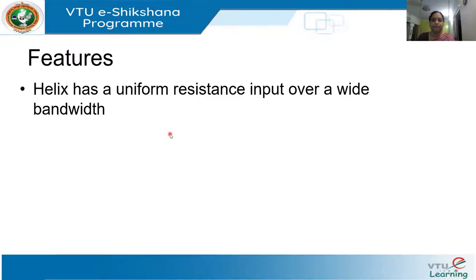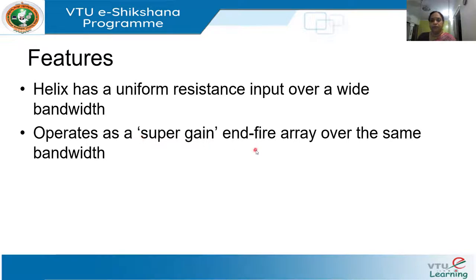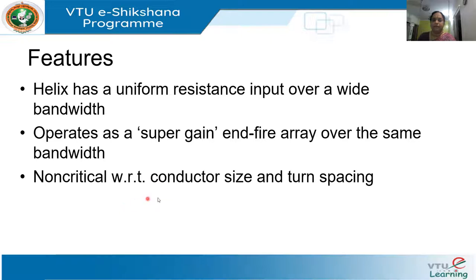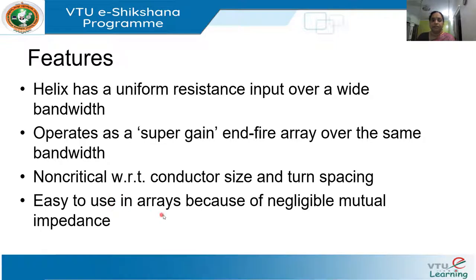What are the basic features? It has a uniform resistive input over a wide bandwidth, and even if you operate it as an N-fire array, it has a super gain — the gain is constant over the same bandwidth. The conductor size and turn spacing are non-critical. It is also easy to use in arrays because of negligible mutual impedance between the array elements. These are the features that separate helical antennas from other antennas.